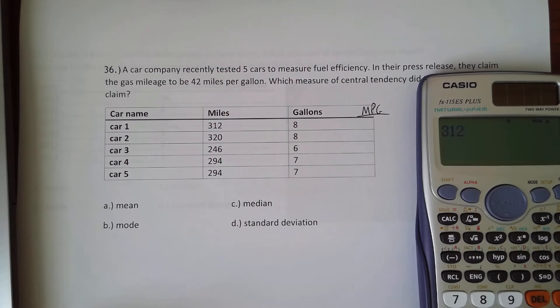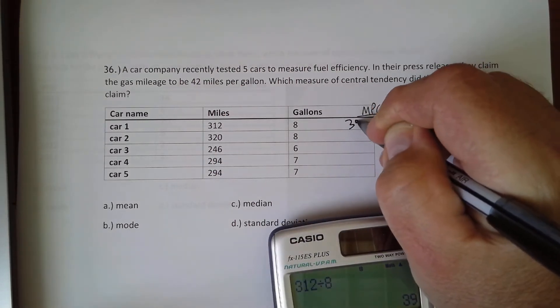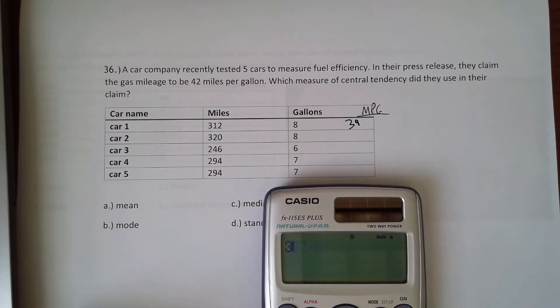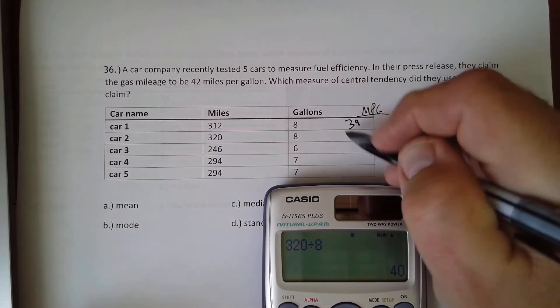So 312 divided by 8, and that gives us the first one, which is 39. And then the next one we have 320 divided by 8 is 40.